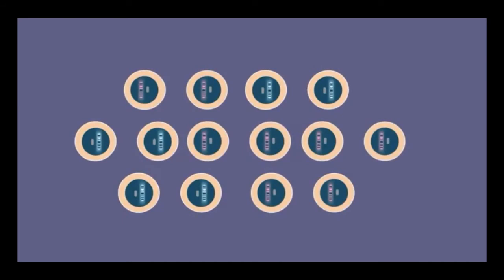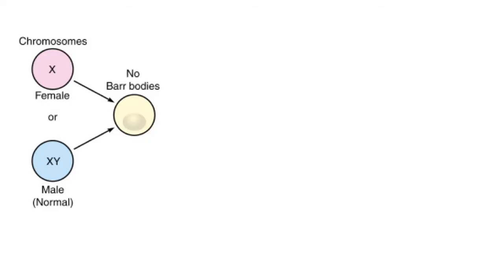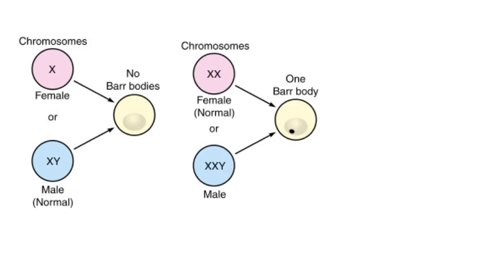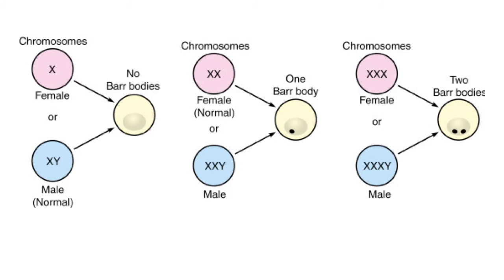What that means for chromosomal abnormalities involving non-disjunction of the X chromosome is this: individuals with Turner syndrome only have one X chromosome, which they need, so they don't form any Barr bodies. Most females — those with a normal number of X chromosomes — as well as males that have two X chromosomes, have one too many X chromosomes, so they form one Barr body per cell. Females with trisomy of the X chromosome, or triple X syndrome, or males that inherit two X chromosomes, will form two Barr bodies per cell, so that only one X remains active.